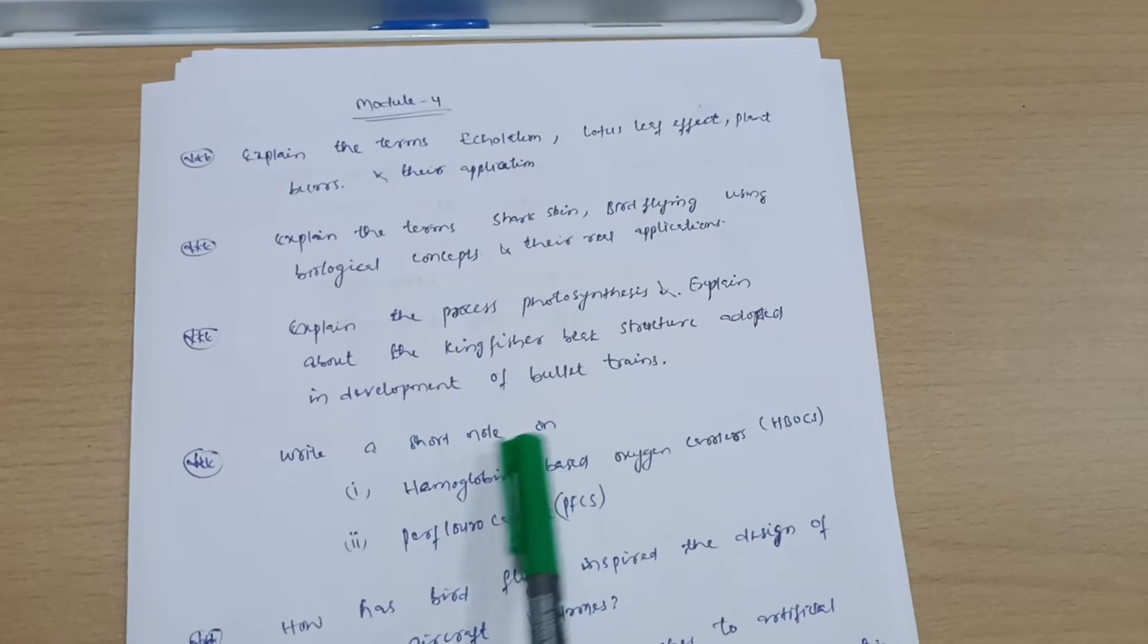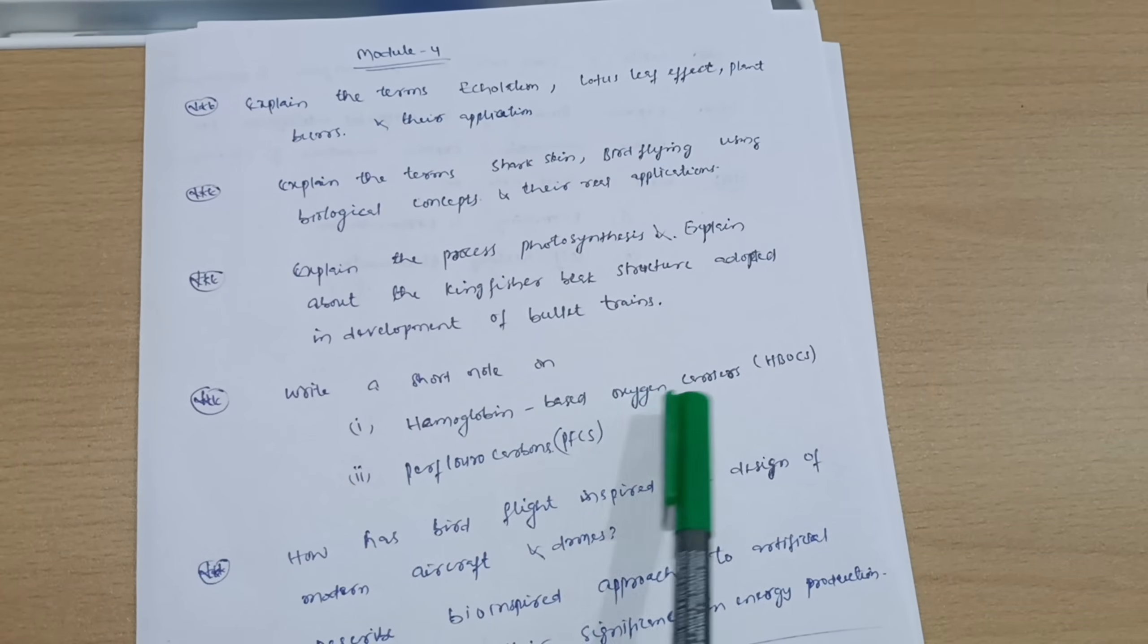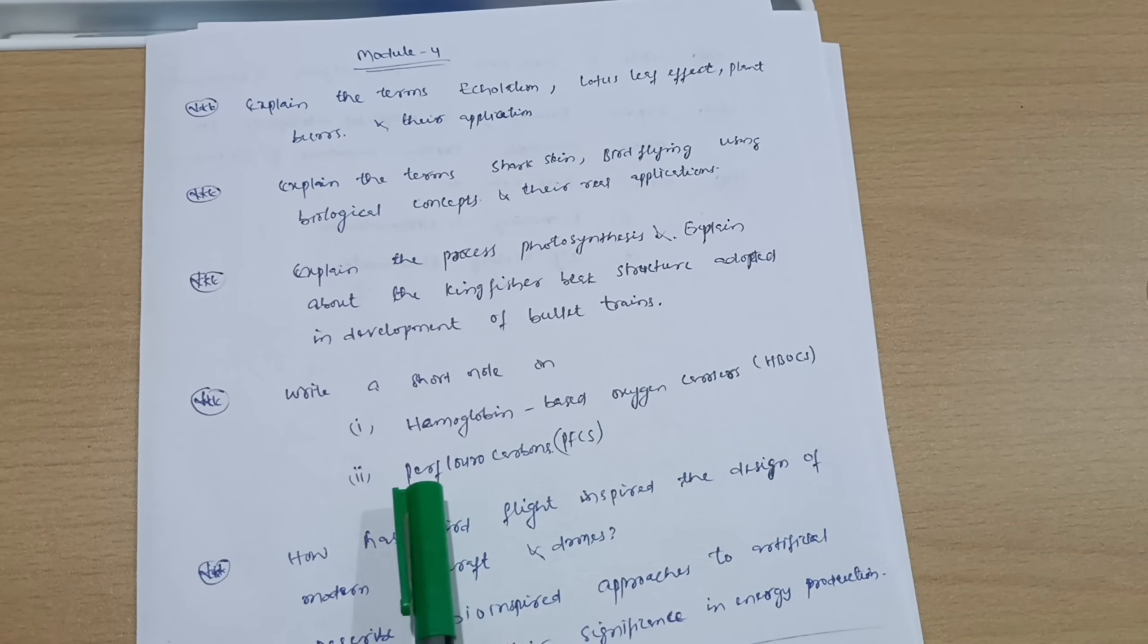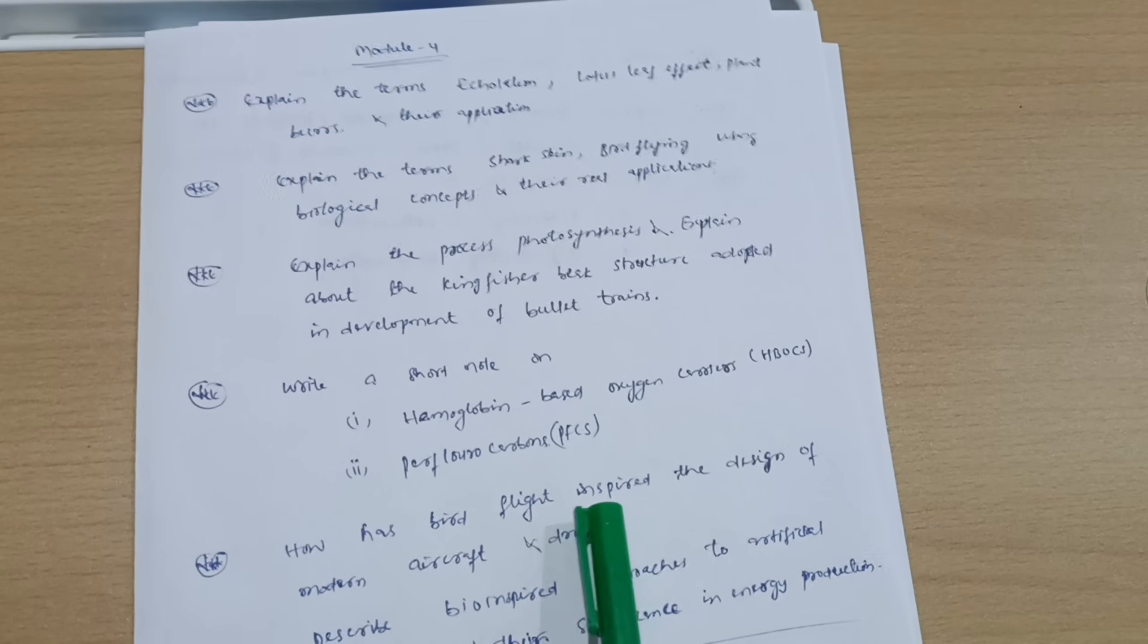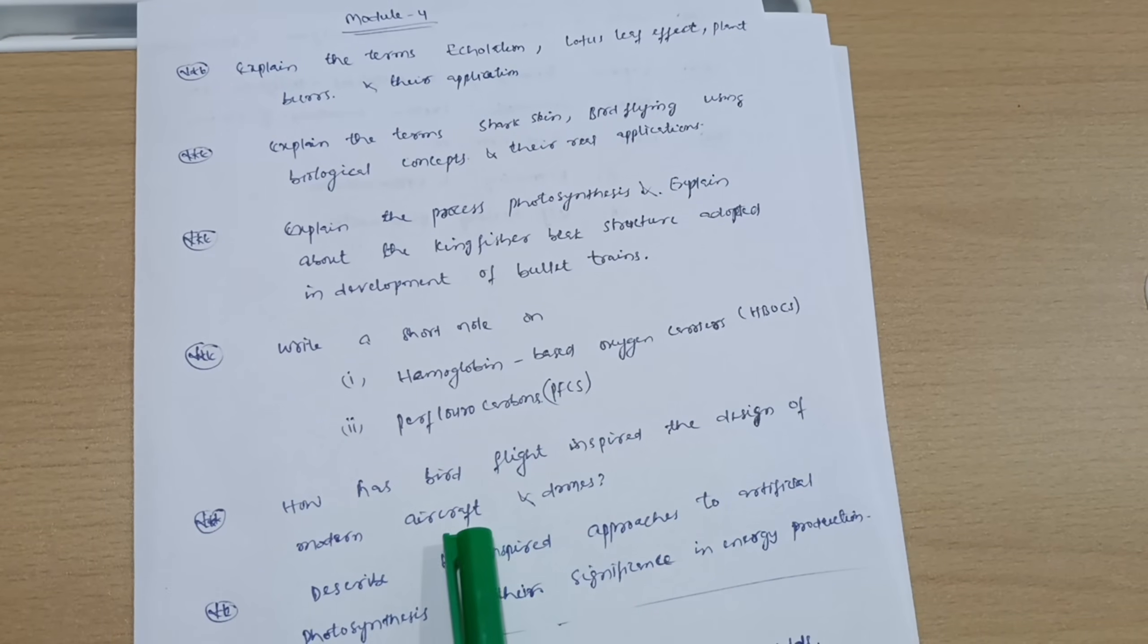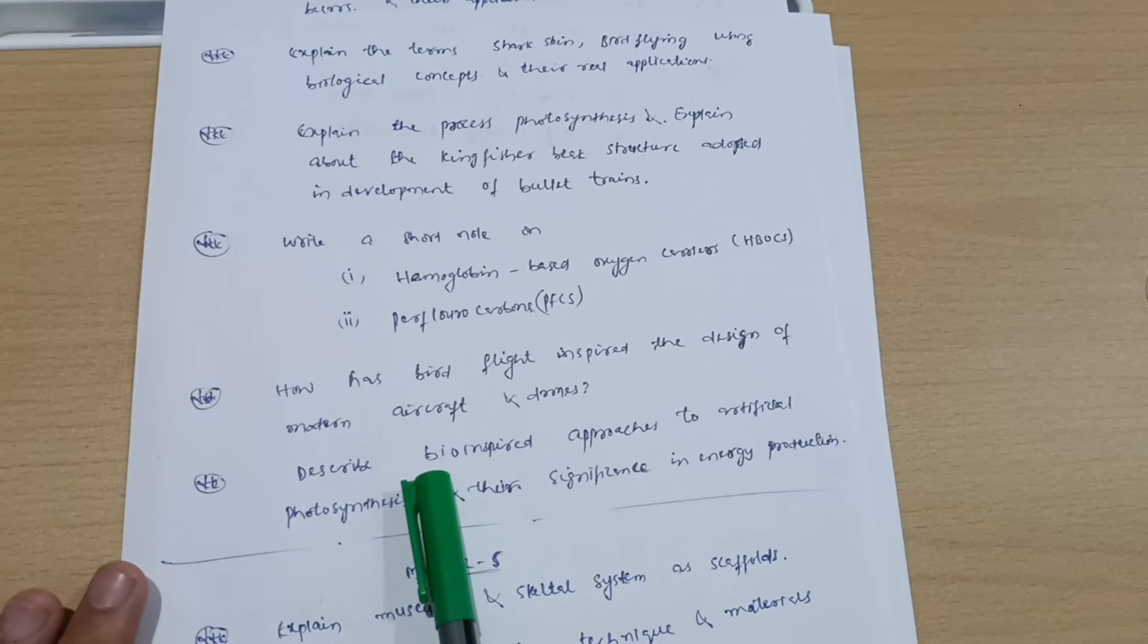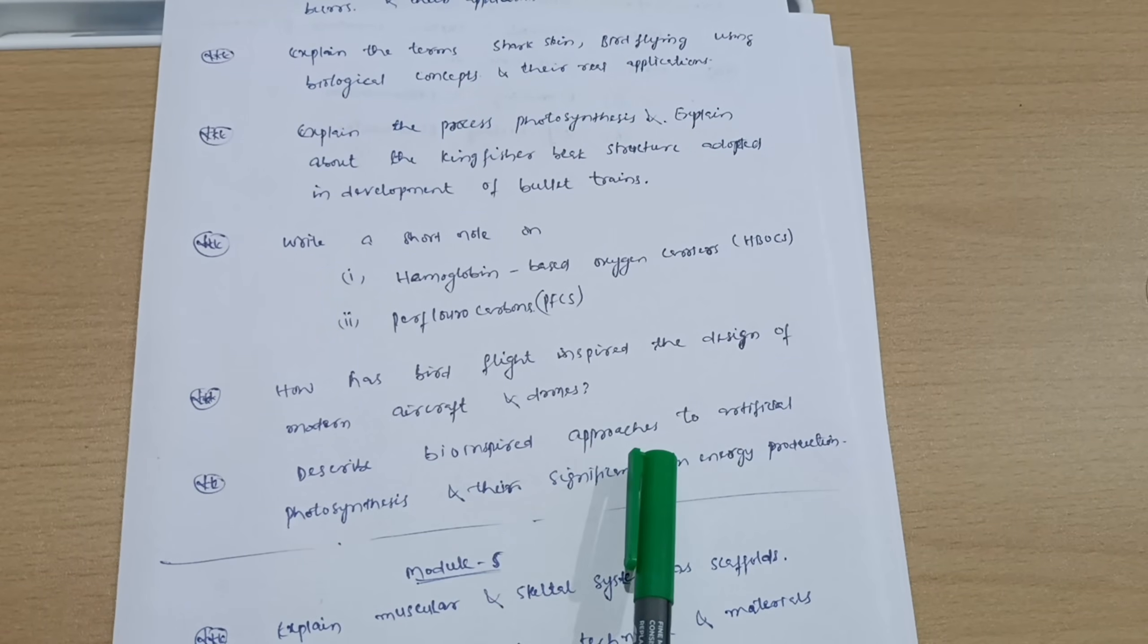Write a short note on hemoglobin-based oxygen carriers (HBOCs) and perfluorocarbons (PFCs). How has bird flight inspired the design of modern aircraft and drones? Describe bio-inspired approaches to artificial photosynthesis and their significance in energy production. This is all about Module 4.